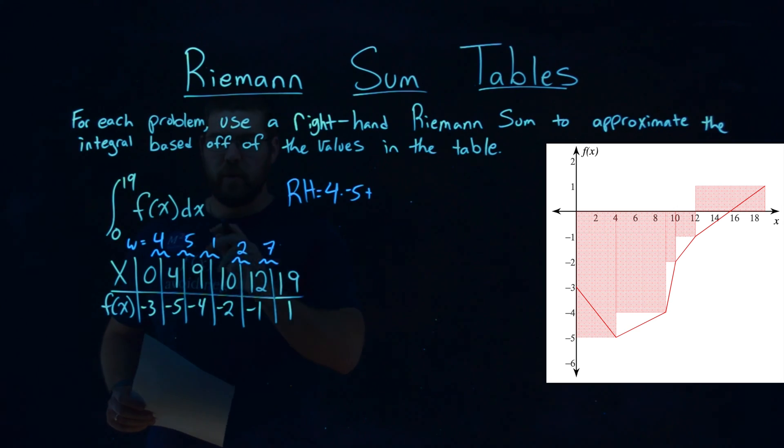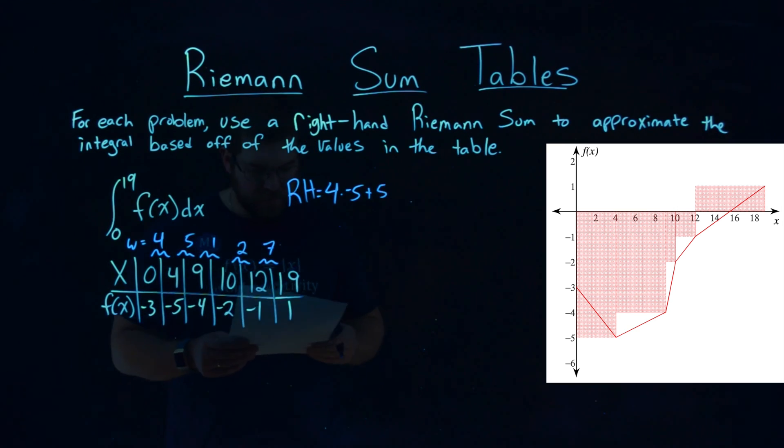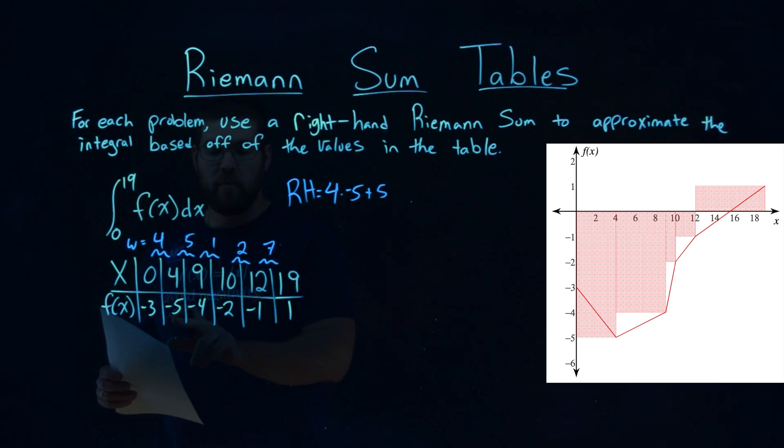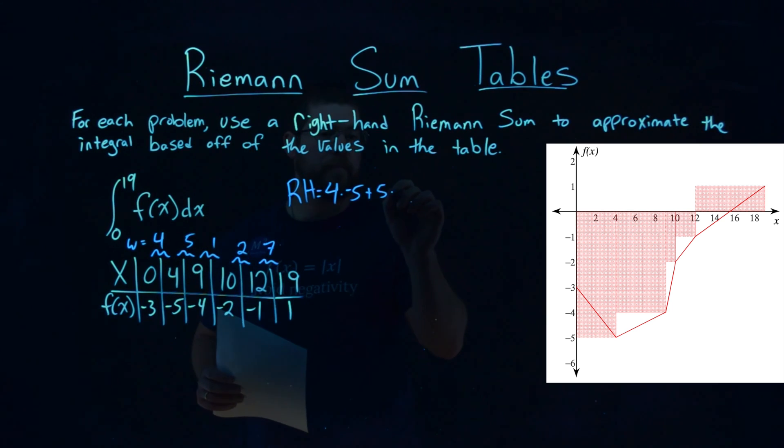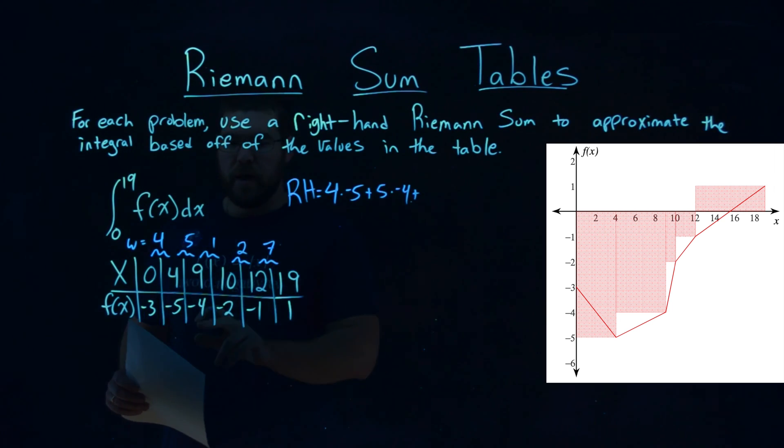Plus, next width is 5. Multiply that by the right part, its height, negative 4. Plus, a width of 1 here, times its height, negative 2,